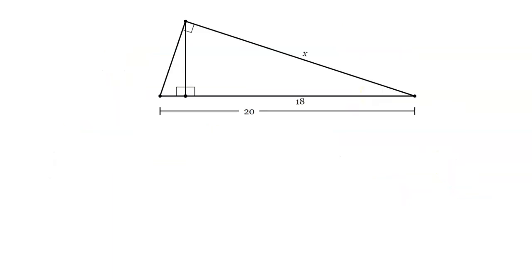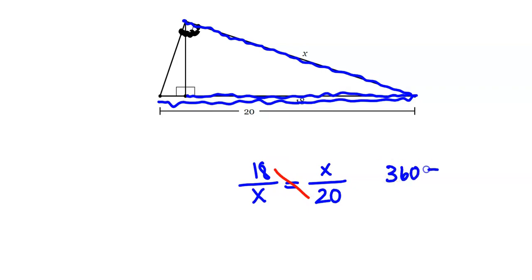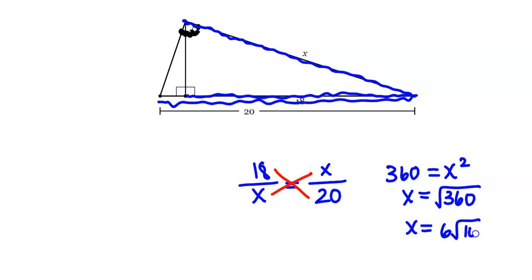Let's put this to action on the first example. The skier goes down the right side of the mountain, so that side is the geometric mean and appears twice diagonally. Once the skier gets to the bottom, the skier can go to the first aid tent, which is 18, or all the way to the chairlift, which has a total length of 20. Cross-multiplying: 18 times 20 gives 360, and x times x gives x squared. Taking the square root of both sides gives the square root of 360, which simplifies to 6√10. So x = 6√10.